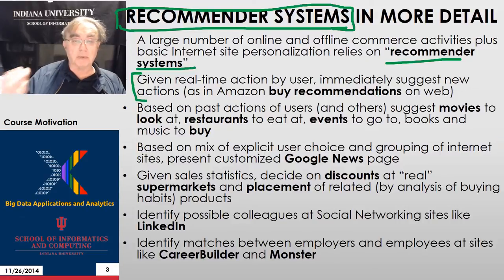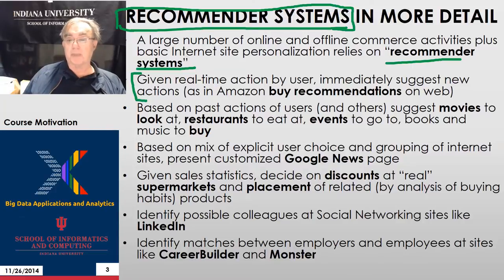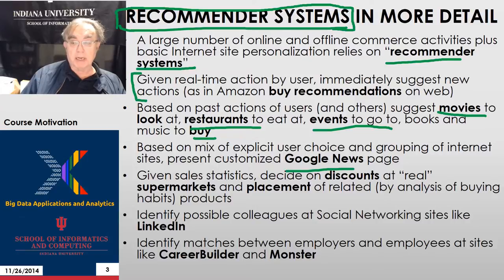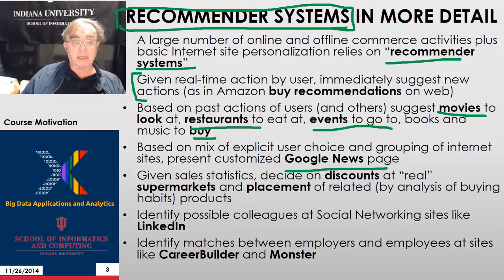Given some action by the user — what they click on, what they want to buy — you suggest similar things they might buy. With Amazon or a bookstore, when you look at a book they suggest similar books or similar things to buy. You can do the same thing with movies — that's Netflix — restaurants to eat at, events to go to, books and movies. You can also do things like Google News, where you try to group sites into categories and match those categories to users.